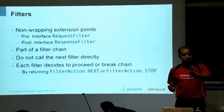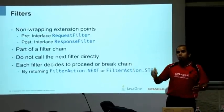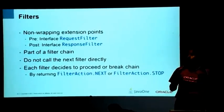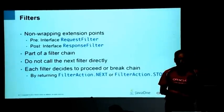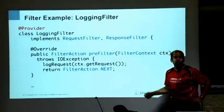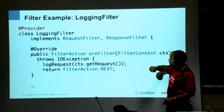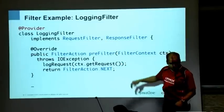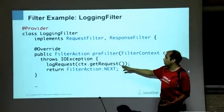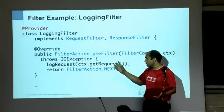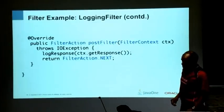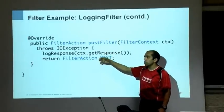Here's an example of a logging filter. You say class LoggingFilter, add the @Provider annotation to mark it as a filter provider. You implement RequestFilter and ResponseFilter. In preFilter, you get a filter context, log the request with context.getRequest(), and say FilterAction.next to invoke the next filter in the chain. In postFilter, you get a filter context, log the response, and say FilterAction.next — very simple.